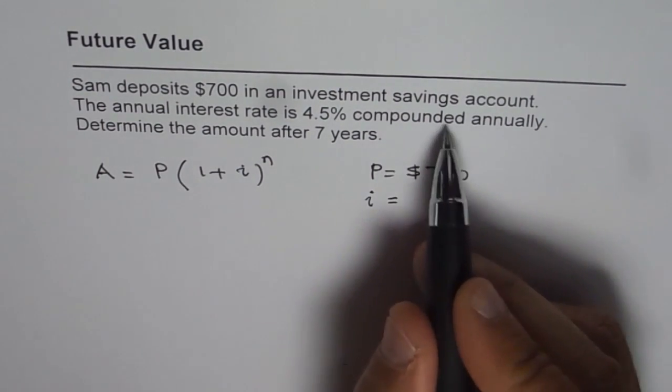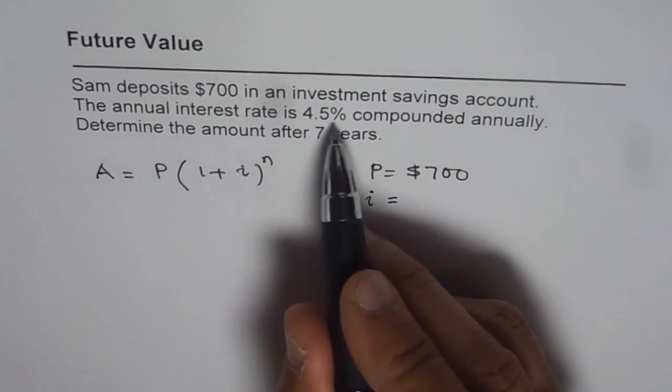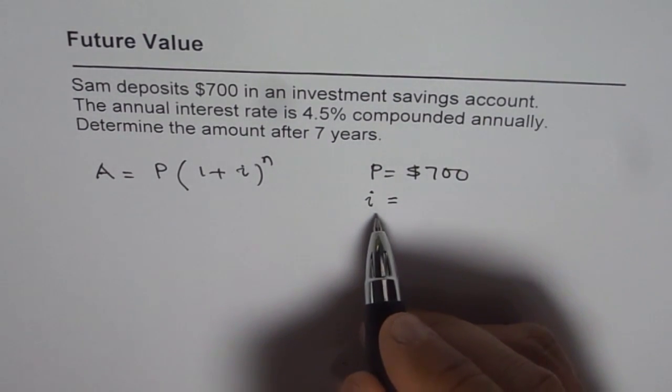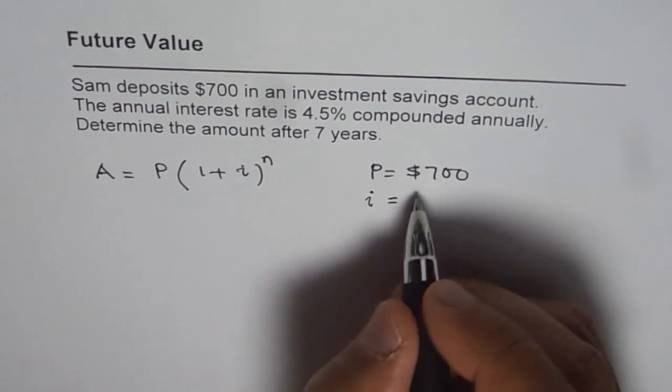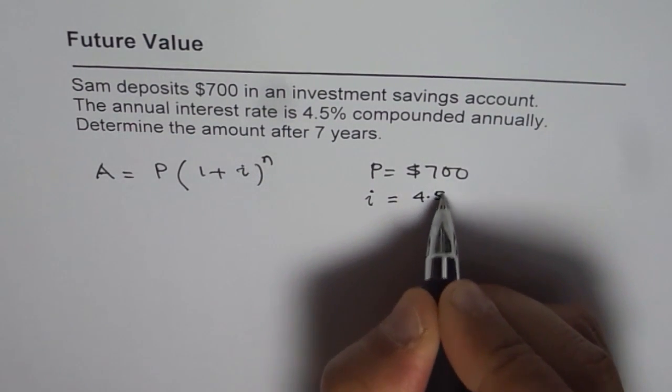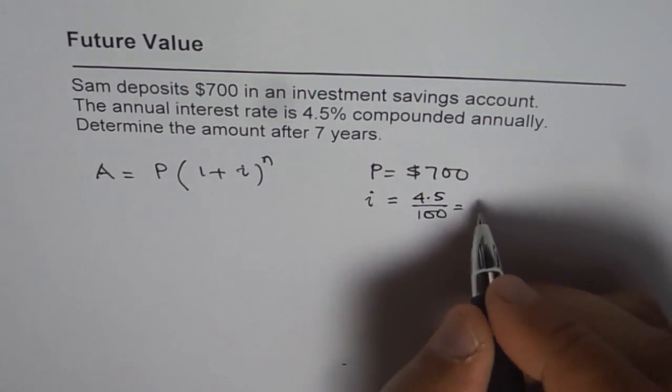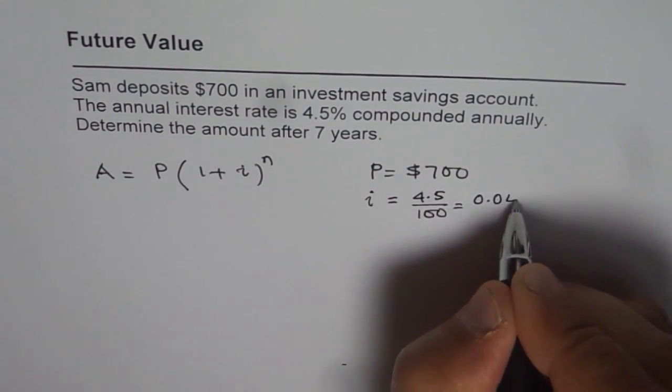Now here the compounding period is 1 year so it will be 4.5%, but this I is the value in decimal value. So decimal equivalent of 4.5% is 4.5 divided by 100 which is 0.045.